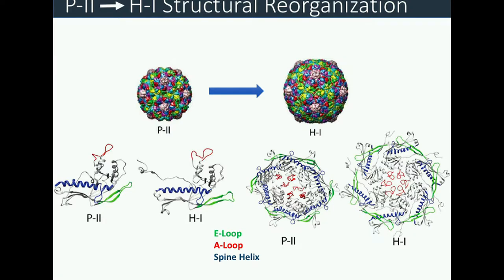Looking at the global changes and then the subunit and capsomere structure: we have crystal structures of both states. When the immature PROHEAD-2 form was solved, the paper was titled 'An Unexpected Twist in Viral Maturation.' Key observations included a deformation of what's known as the spine helix, a rotation of the beta strand e-loop between states, and a reorganization of the A-loop. In the mature state, the skewed hexamer transitions to a symmetric organization of these e-loops.